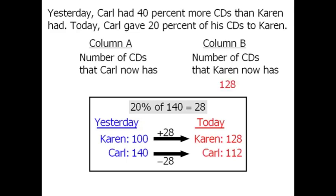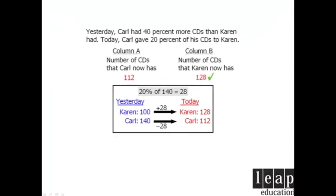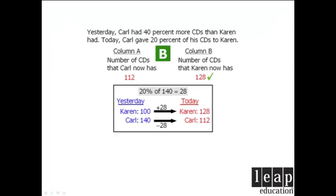So column B equals 128, and column A equals 112. Column B is greater than column A, so our answer is B.